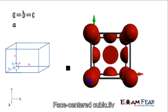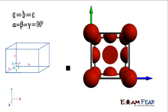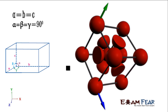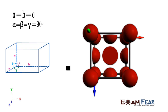The next is the face centered cube. Since it is cubic, all the sides are equal and all the angles are 90 degrees. At all the faces there will be one sphere. Since this sphere is shared by two cells, it is split into half for representation purposes. This is how a face centered cube looks.